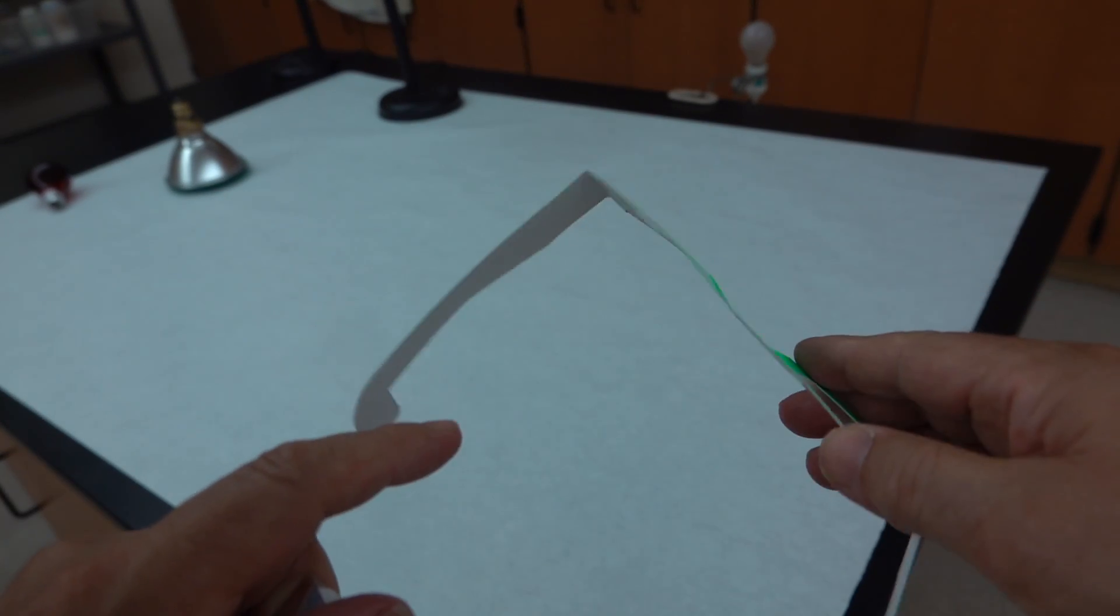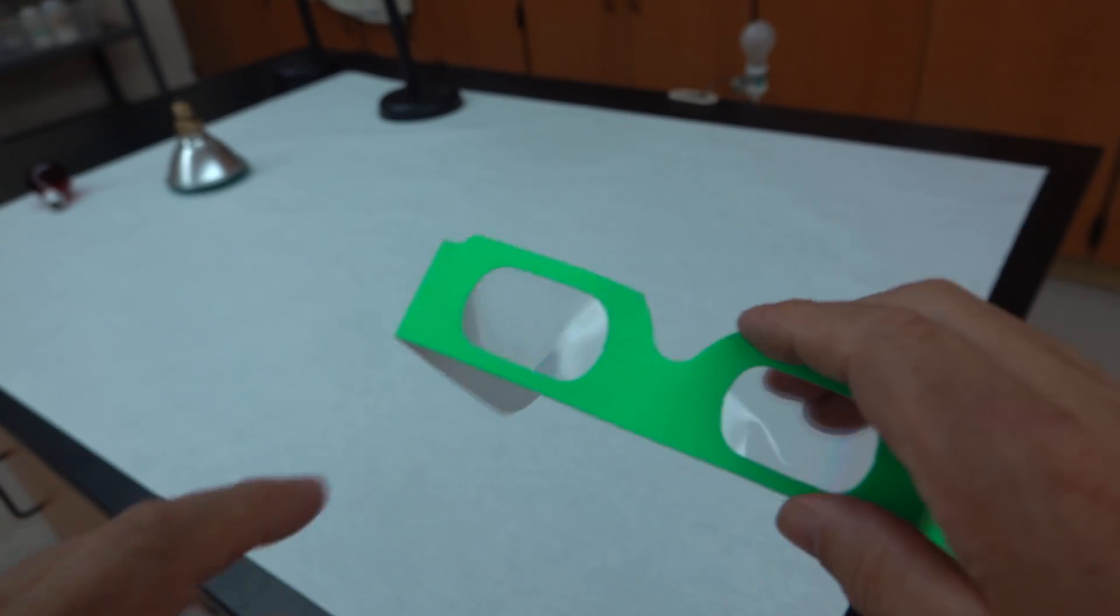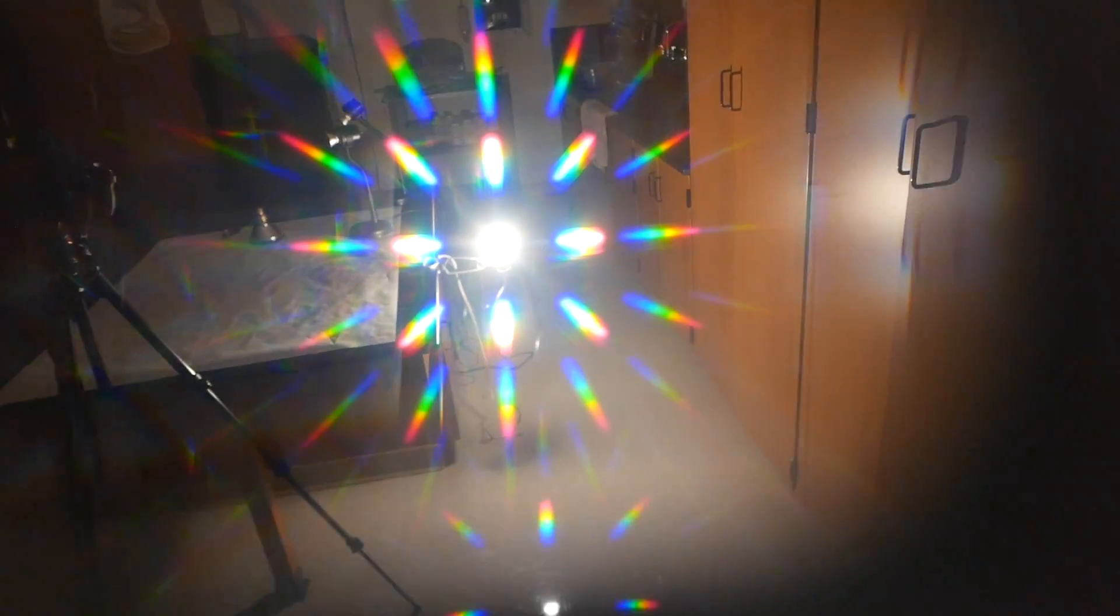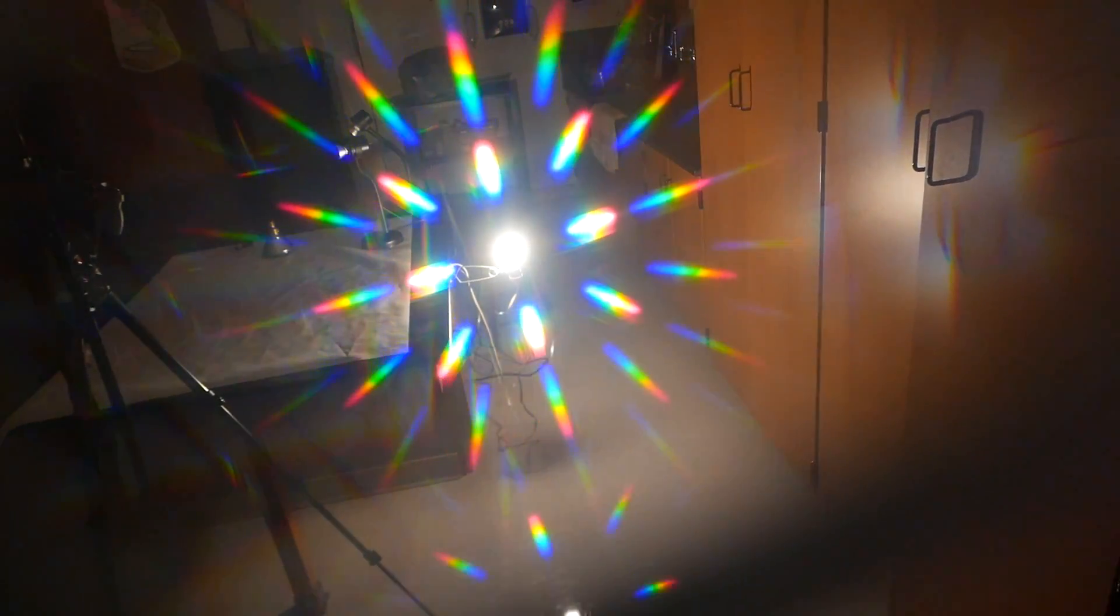Like the prism, the surface of these glasses can also separate light into seven colors of the rainbow. We can see them here looking at white light.